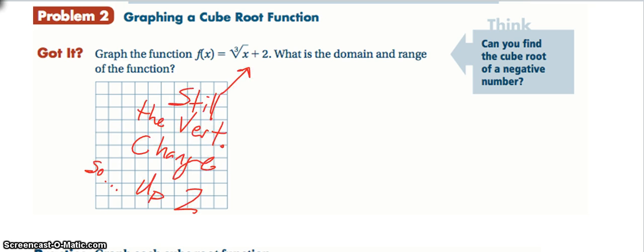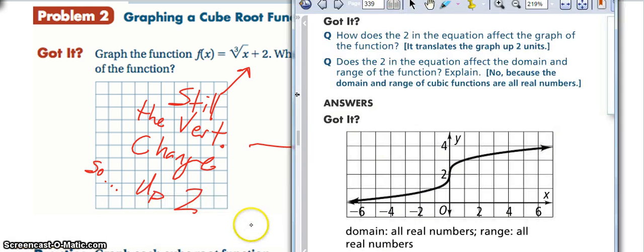All right, so if it's outside the radical, that still is just our vertical change. So remember that our cube root graph looks like that weird kind of S looking thing. But again, because I can't draw it very well, I will just do this and show you that this is what our graph would look like.